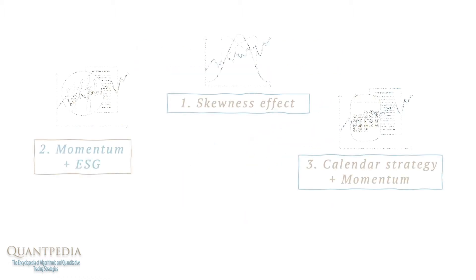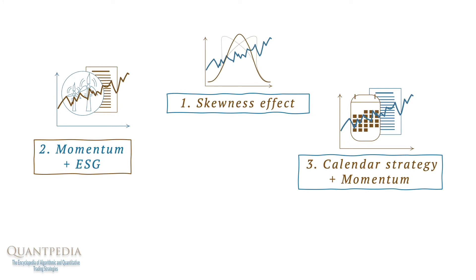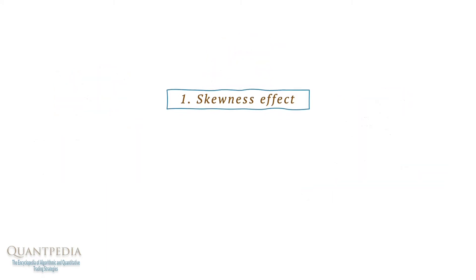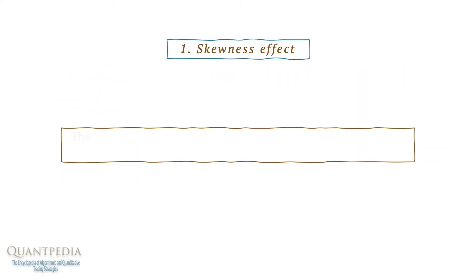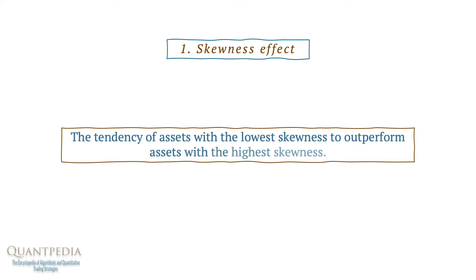So, in this video, we will show you three short examples of how to build on the anomalies that are included in our screener. The goal of the first example is to further explore the skewness effect, the tendency of assets with the lowest skewness to outperform assets with the highest skewness.